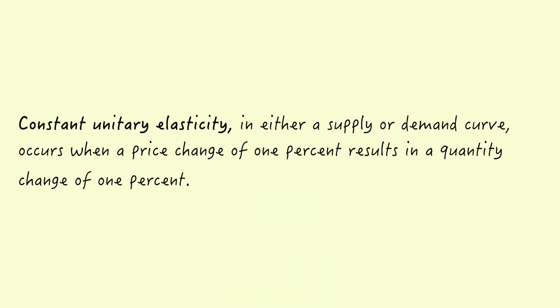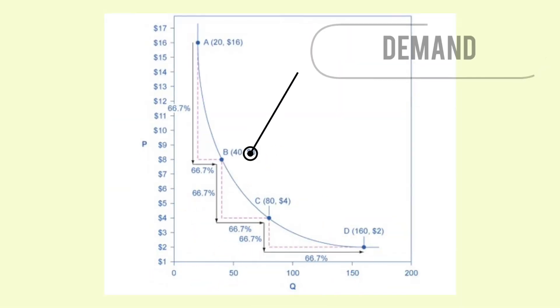Constant unitary elasticity in either the demand or supply curve occurs when a price change of 1% results in a quantity change of 1%. A demand curve with constant unitary elasticity will be a curved line. Notice how price or quantity demanded change by an identical amount in each step down the demand curve.